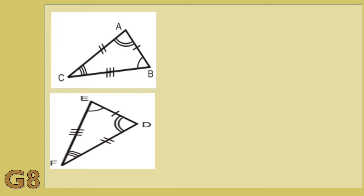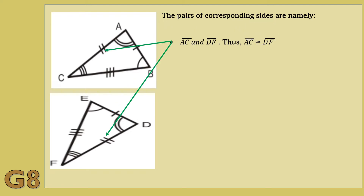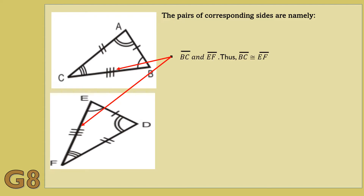Take a look at the corresponding marks. In these figures, the corresponding sides are line segment AB and line segment DE. Thus, line segment AB is congruent to line segment DE. Next, line segment AC and line segment DF are corresponding sides. Thus, line segment AC is congruent to line segment DF. Another pair of corresponding sides are line segment BC and line segment EF. Thus, line segment BC is congruent to line segment EF.